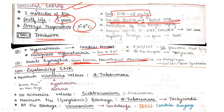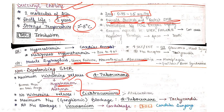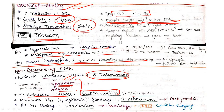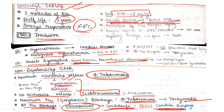For non-depolarizing SMR: maximum histamine release is caused by d-tubocurarine, leading to hypotension — a side effect also seen in asthma. Cisatracurium does not cause histamine release; atracurium causes some but not much. Maximum NN (nicotinic neural) blockade is caused by tubocurarine, which leads to tachycardia. No NN blockade is seen with vecuronium, making it the cardio-safe drug and drug of choice for cardiac surgery.